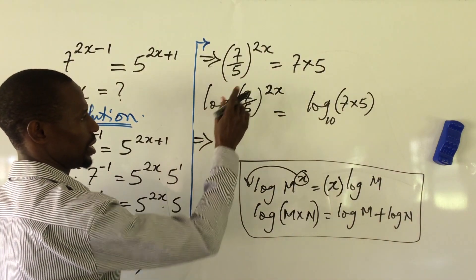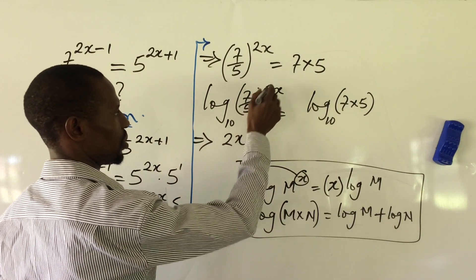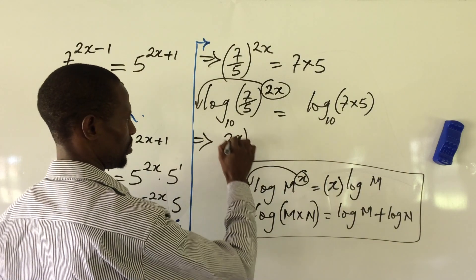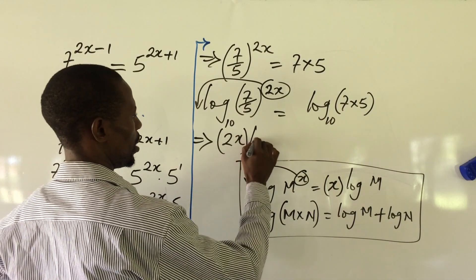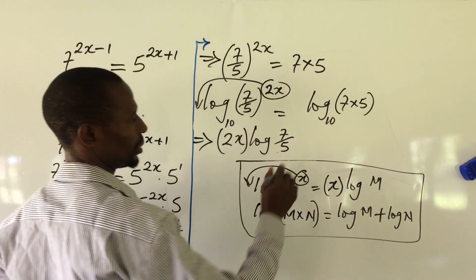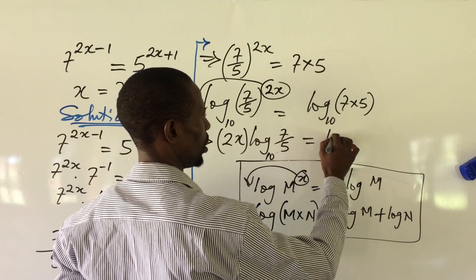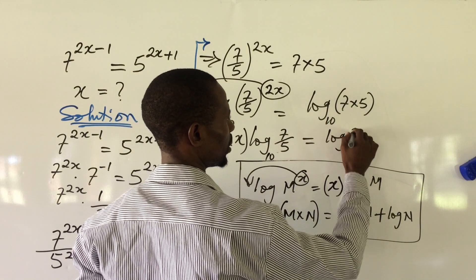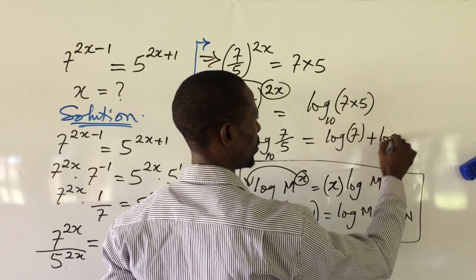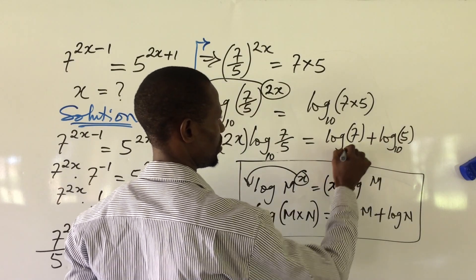Applying both laws, this gives us 2x times log of 7 over 5, base 10, equal to log 7, base 10, plus log 5, base 10.